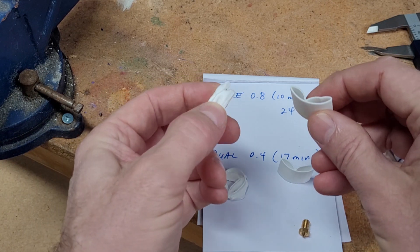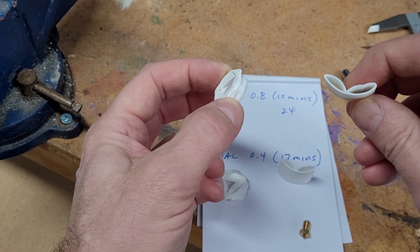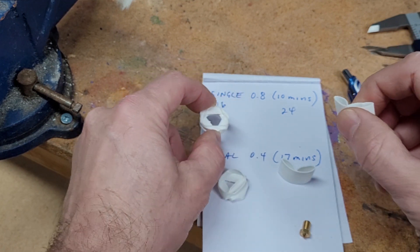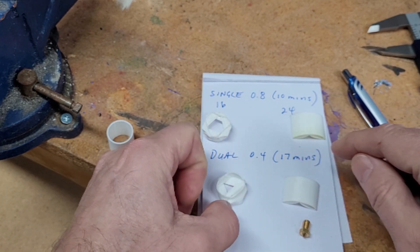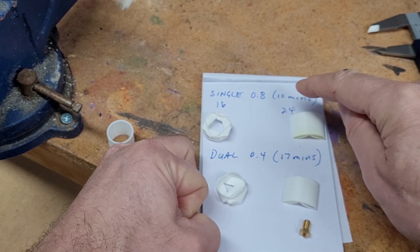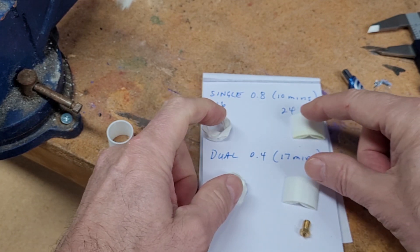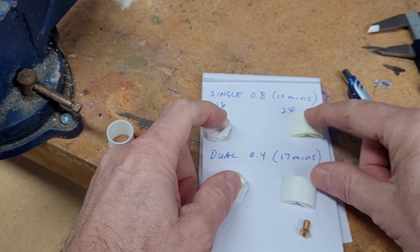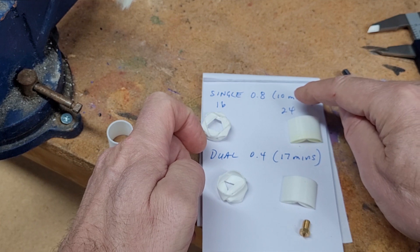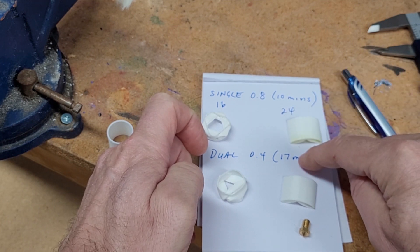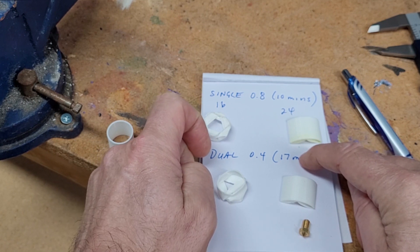In conclusion, the 0.8 millimeter single wall is stronger in one orientation, not so much in the other, but it definitely prints faster when you consider the fact that the single wall will print in 10 minutes versus the dual wall in 17 minutes. So these were 20 by 20 by 20, but imagine on a much larger scale how much time savings could be had between the 10 minutes and 17 minutes. If you stick around, I'll show you where you can customize the settings of the line width in Cura.